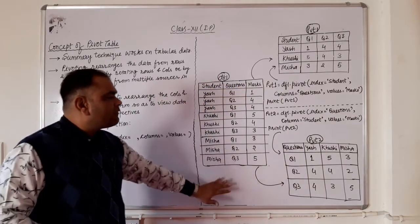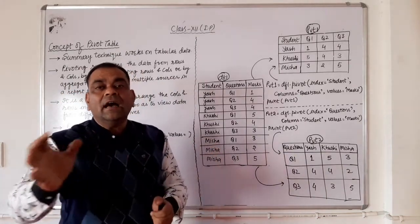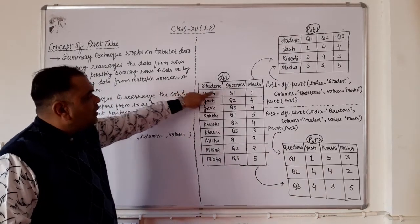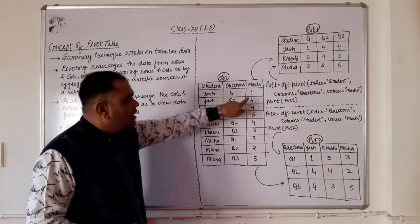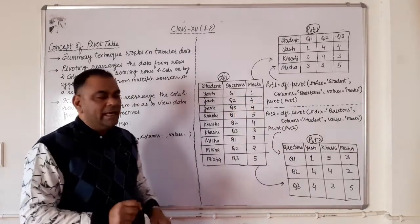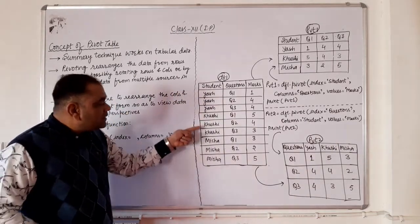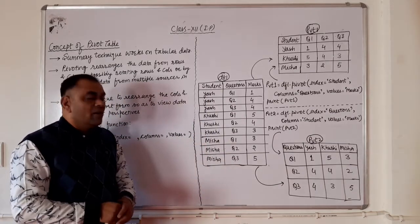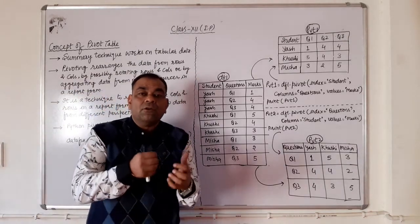This data frame is related to an MCT examination conducted recently in a particular school. Student Yash got one mark in question one, four marks in question two, and four marks in question three. The first three records belong to Yash, the next three to Khushi, and the last three records to Misha.